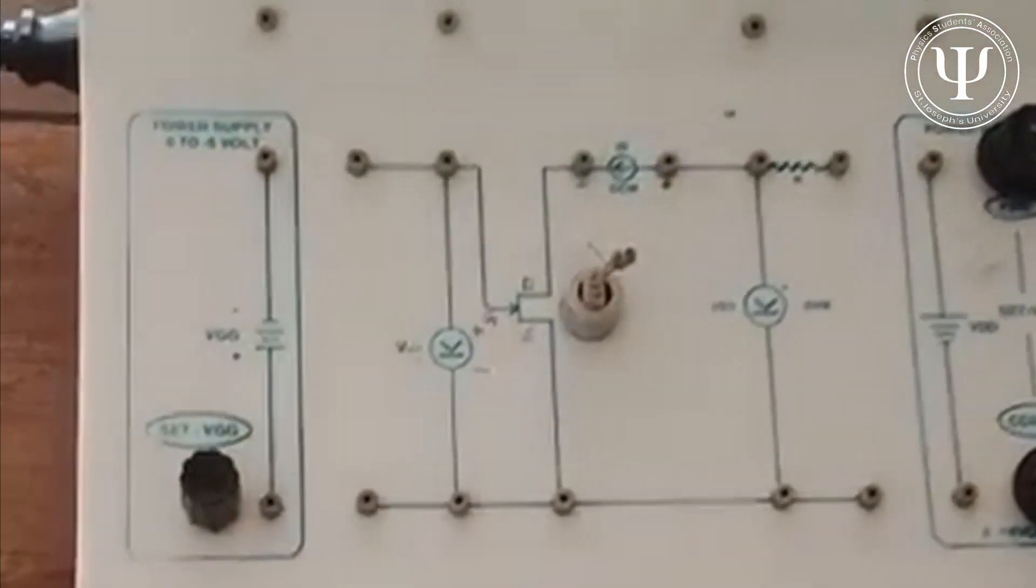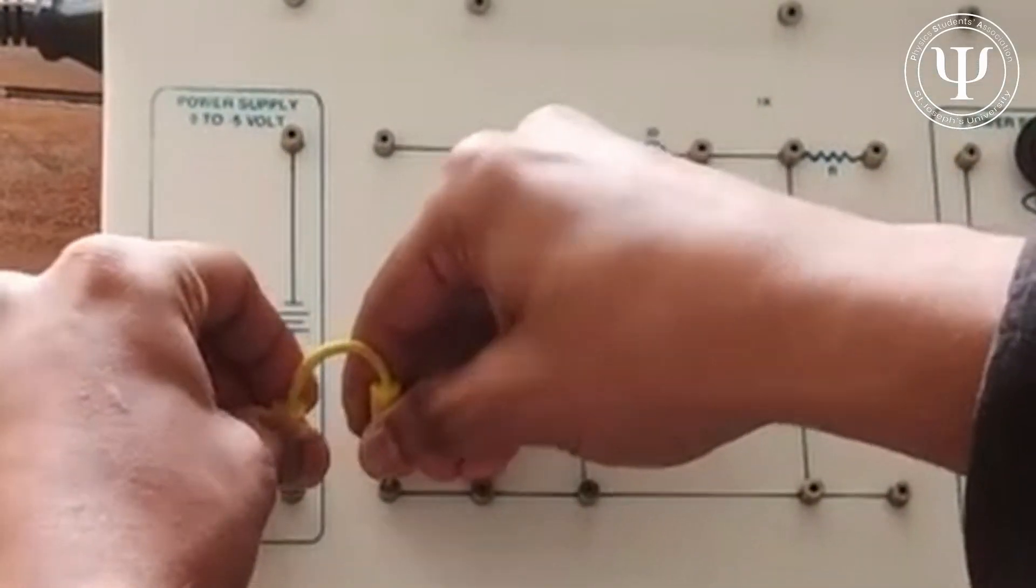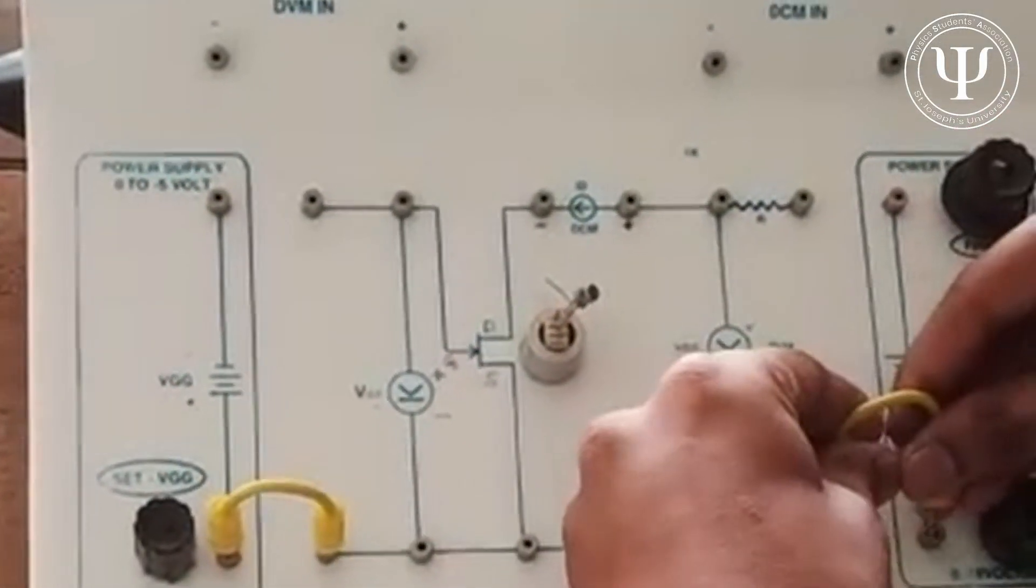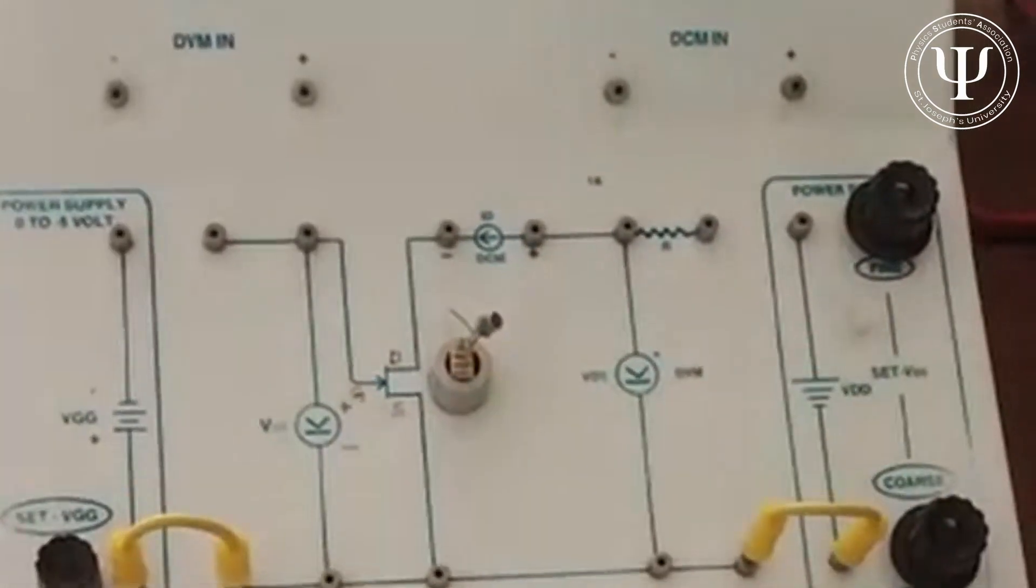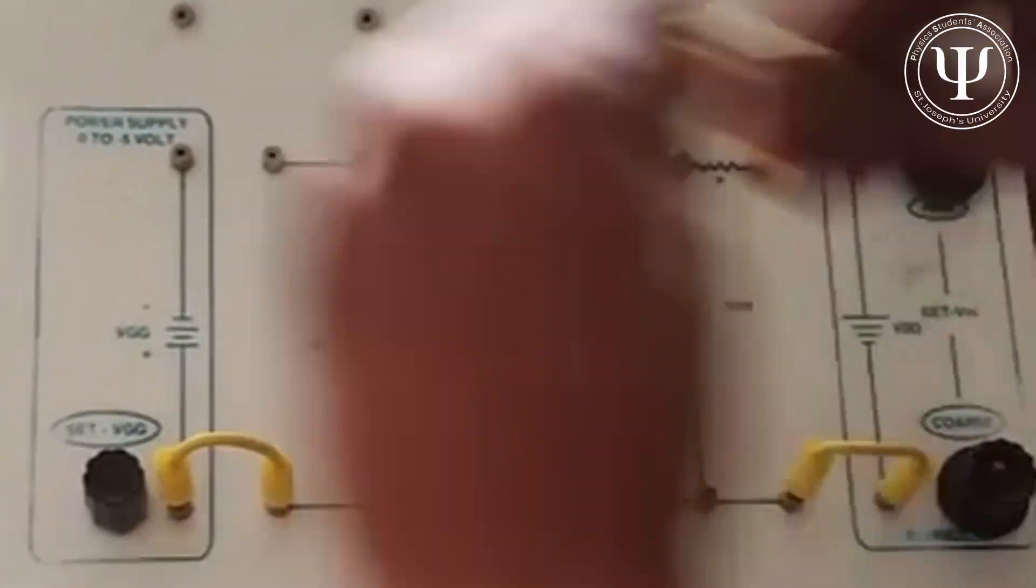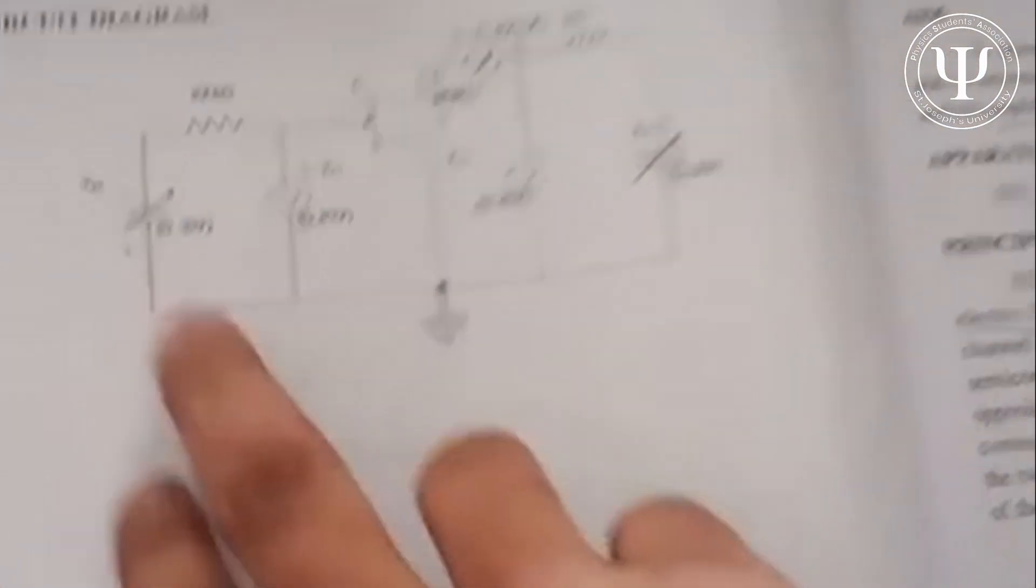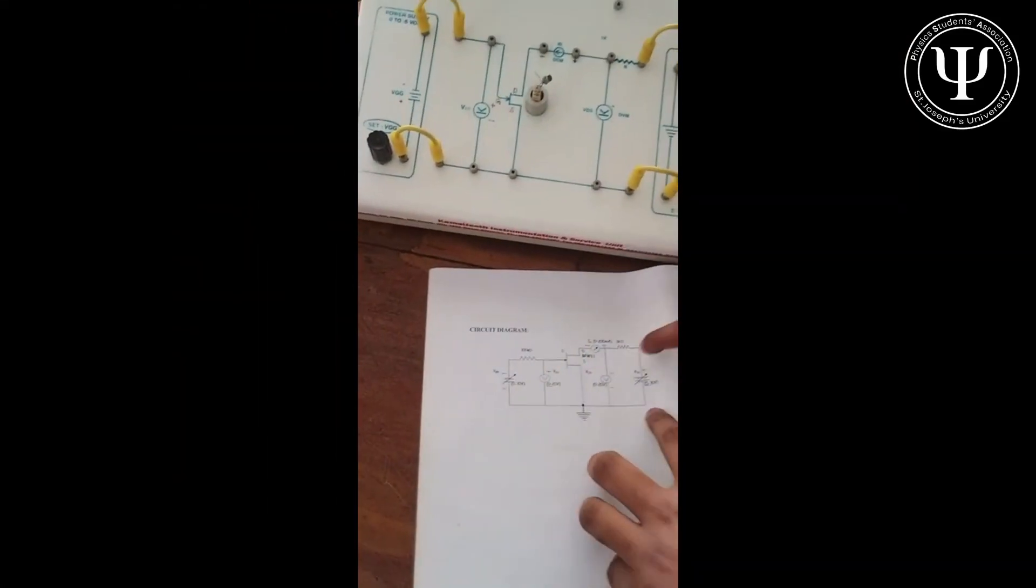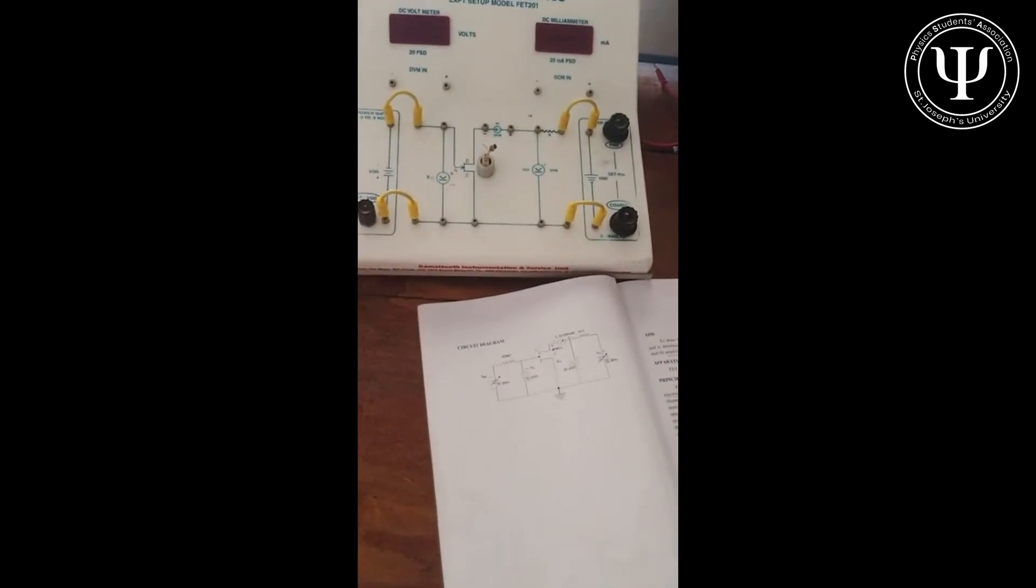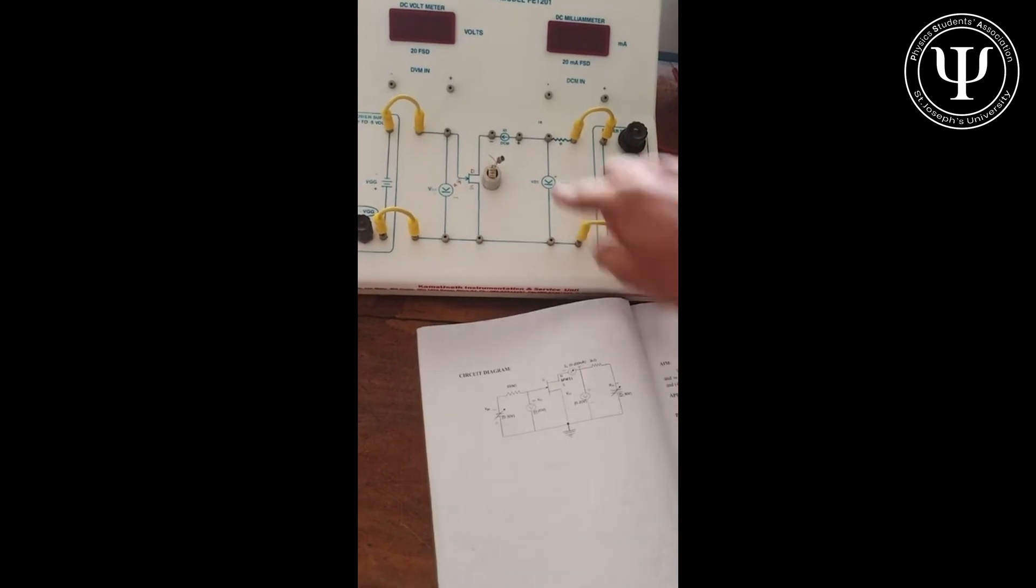Going to the experiment part, connecting the circuit is really simple. Take four of these guys and connect the corners. If you have the manual with you or you're looking at the video right now, you can notice that this is the VGG connection through here, and this is the VDD connection through here.